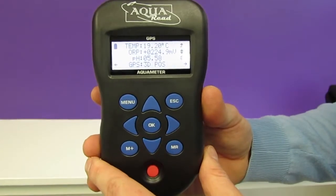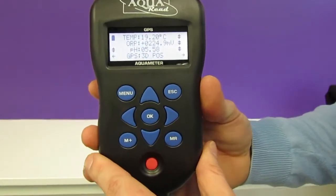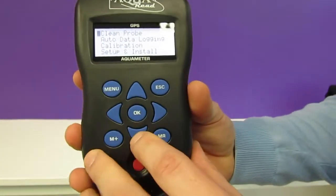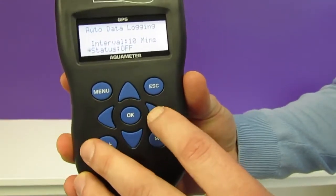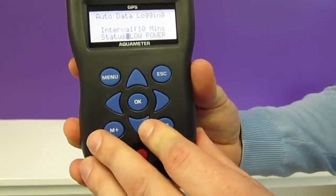One of the newest features of the GPS Aquameter is the low power auto data logging mode. To find this we go into menu, auto data logging, scroll down to status and select low power mode.